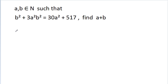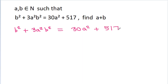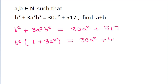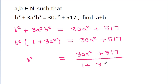We have given that b squared plus 3a squared b squared is equal to 30a squared plus 517. We can take b squared common and we will get b squared times 1 plus 3a squared, that will be equal to 30a squared plus 517. So b squared will be equal to 30a squared plus 517 divided by 1 plus 3a squared.